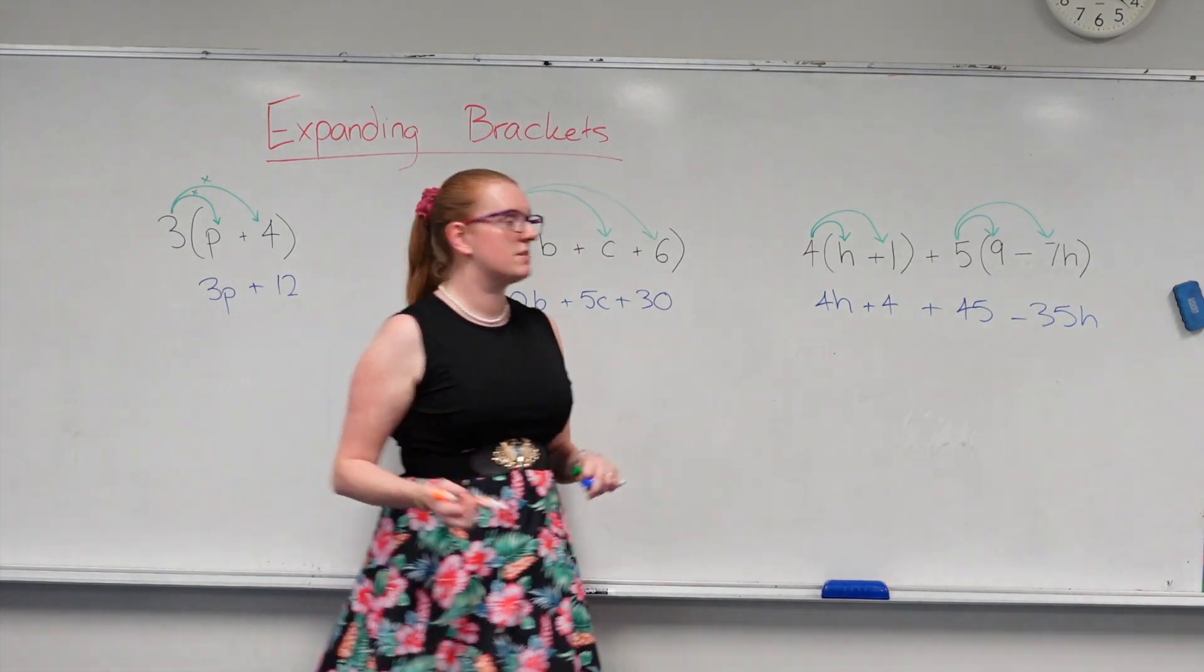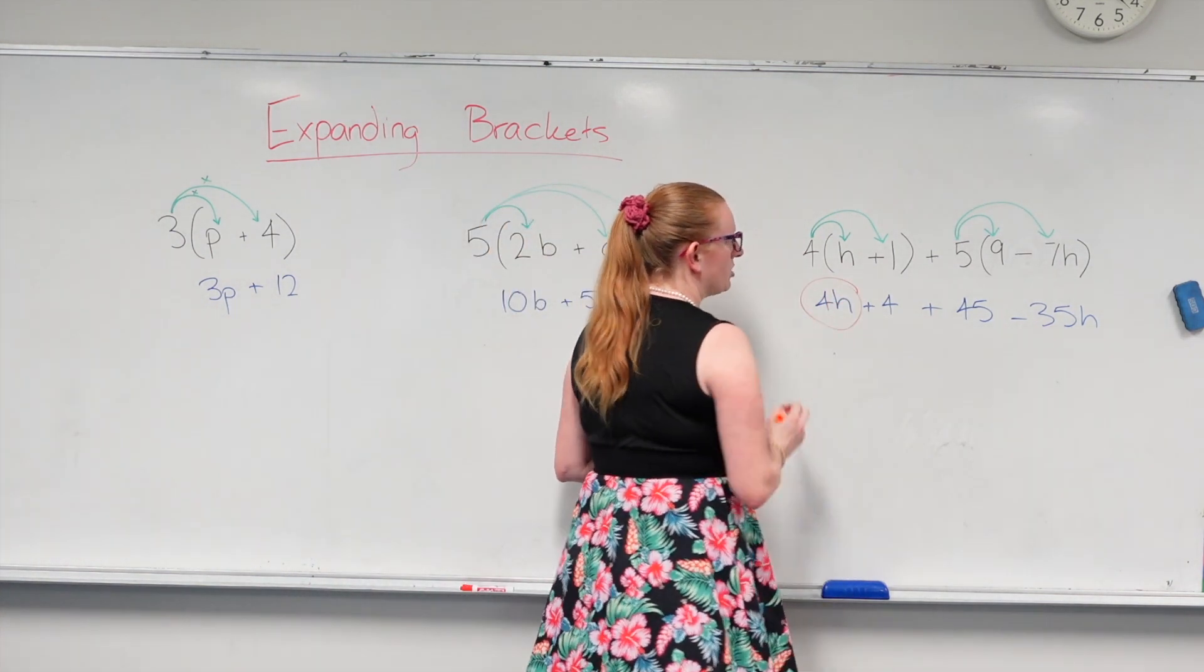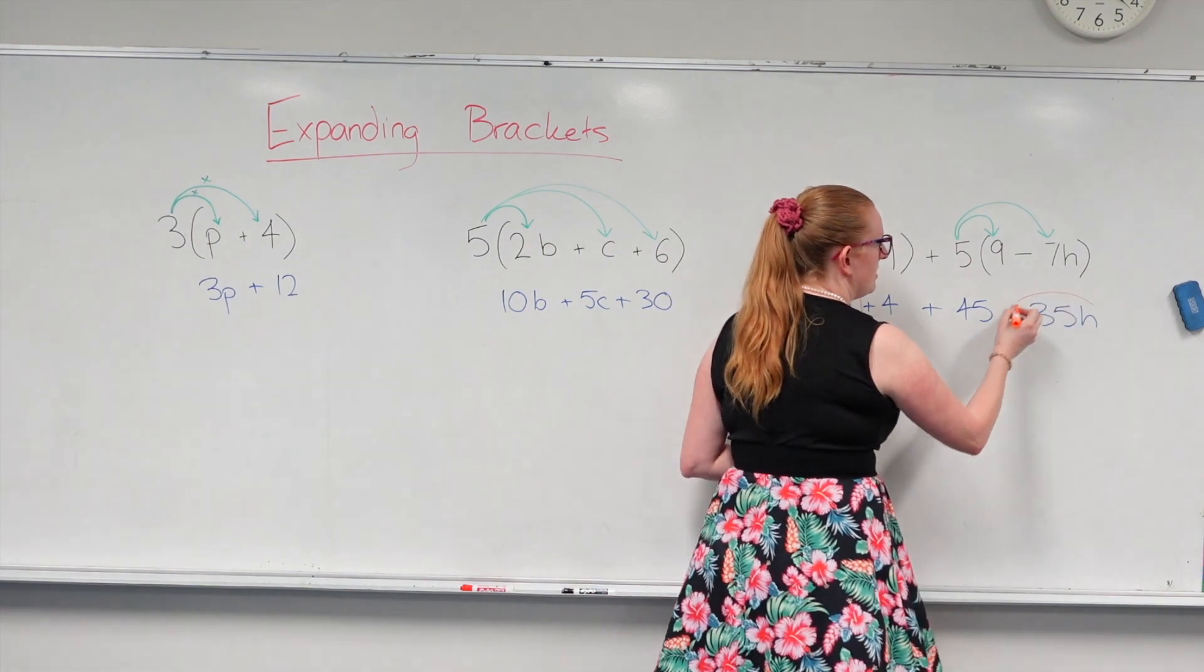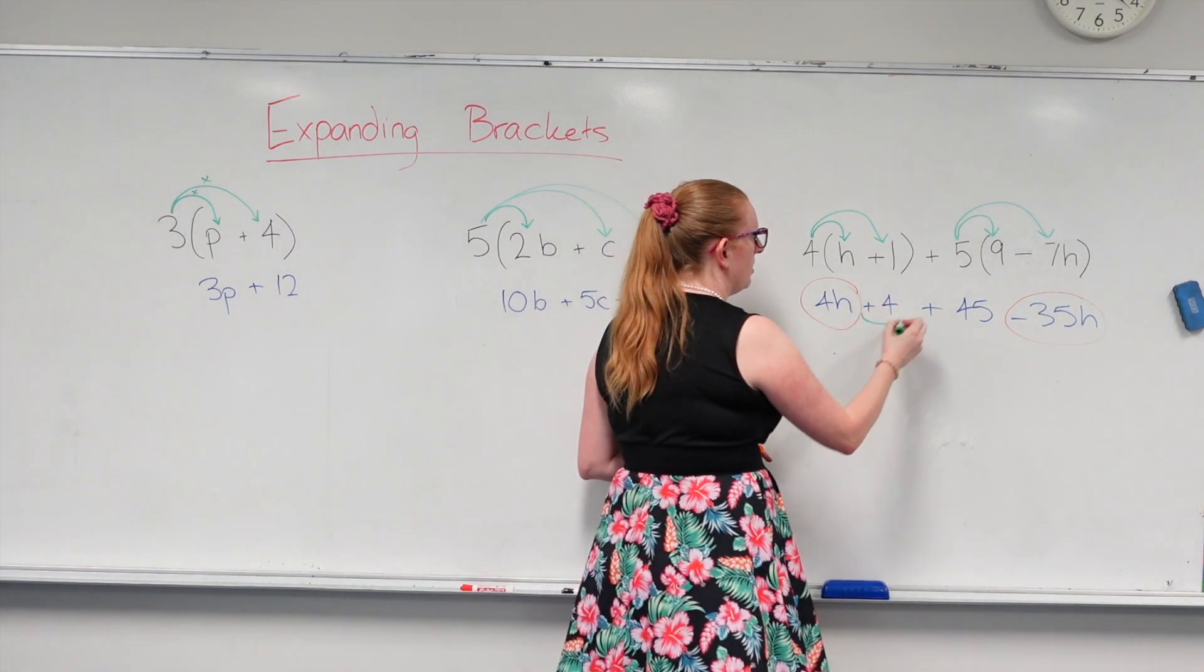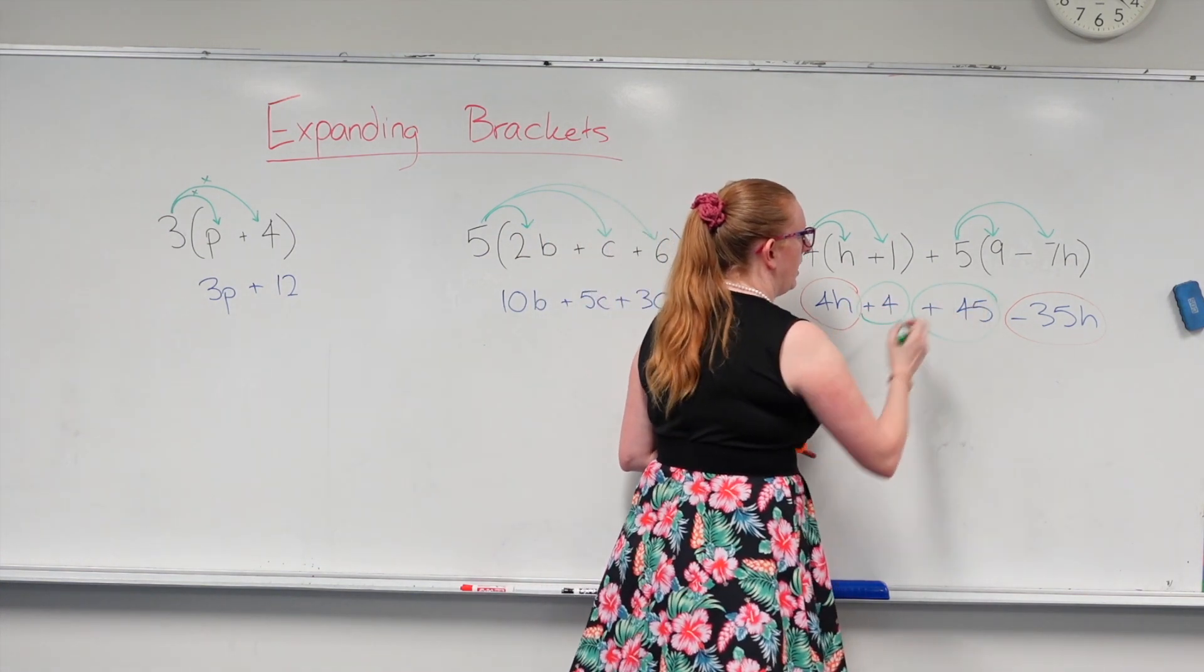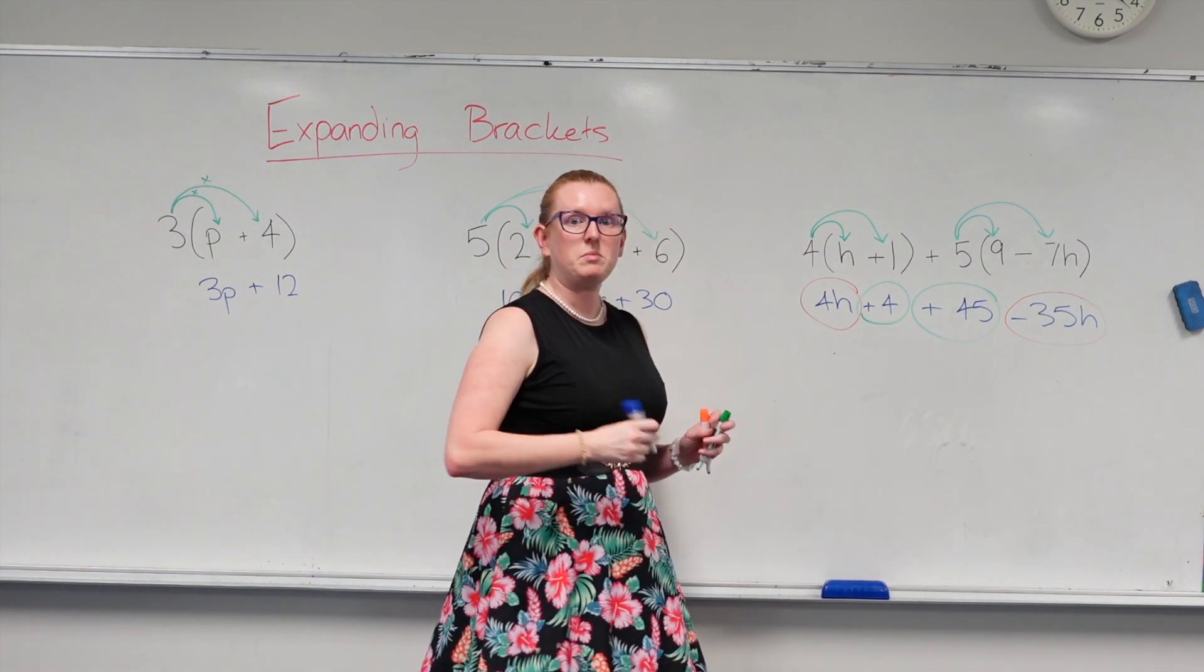Now I've got some like terms. So this has a h on it. And this negative 35h is a like term. And then in green, I'll just do these ones. So I've got a positive 4 and a positive 45.